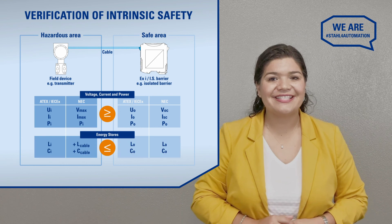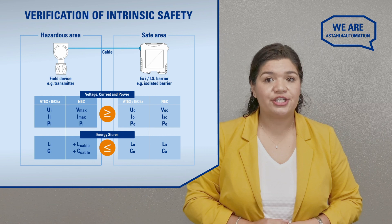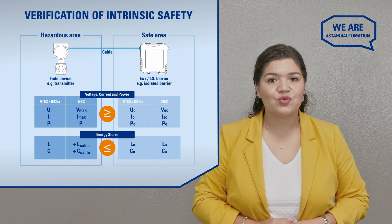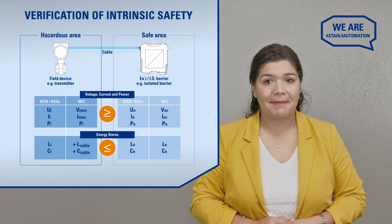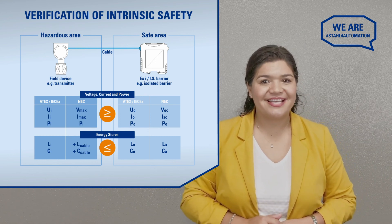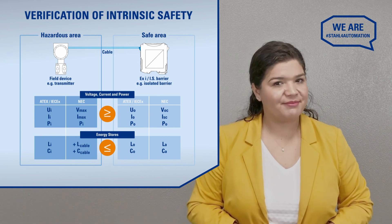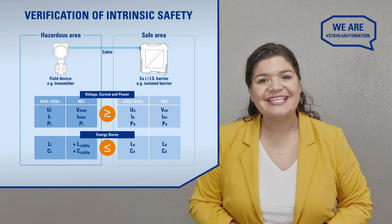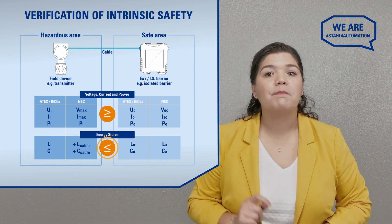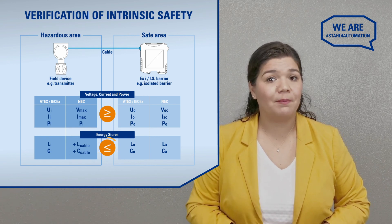The next step is calculating energy storage. The relevant parameters here are internal capacitance and inductance of the field device, as well as the maximum external capacitance and inductance of the barrier, and the capacitance and inductance of the cable. The length of the cable is important here, so keep that in mind. In this case, the maximum capacitance and inductance of the barrier must be greater than or equal to those of the field device and cable combined.